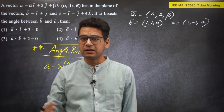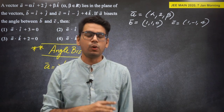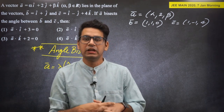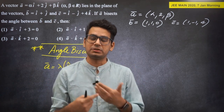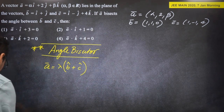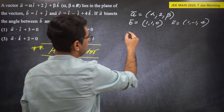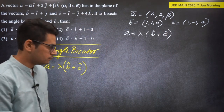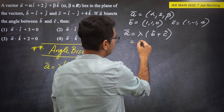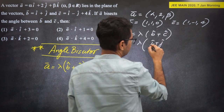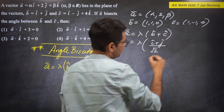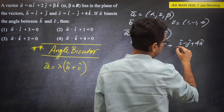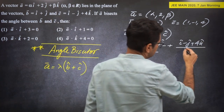Please maintain patience — this is a generic session for all students. Less commenting, more concentration. So, A vector equals lambda times (B-cap + C-cap). That means: (alpha, 2, beta) = lambda * [(1,1,0)/√2 + (1,-1,4)/√18]. We need to find alpha and beta by comparing coefficients.